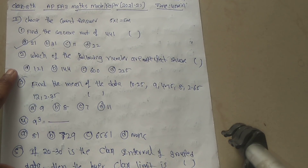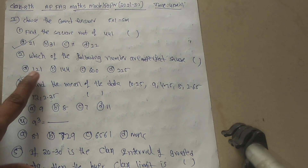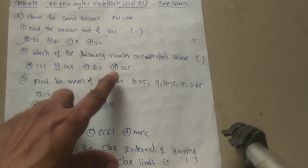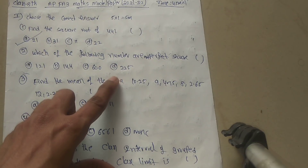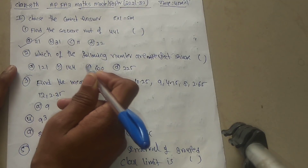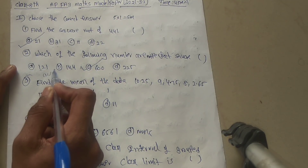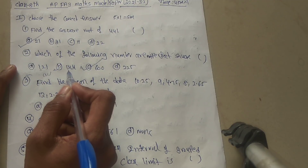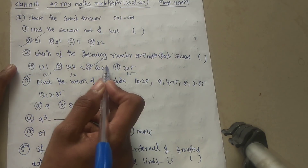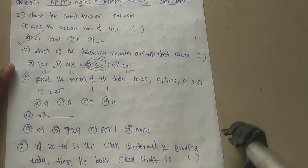Second question: which of the following numbers is not a perfect square? Option A: 121, Option B: 144, Option C: 600, Option D: 225. 121 is 11 squared, 144 is 12 squared, 225 is 15 squared, but 600 is not a perfect square. So the answer is Option C.